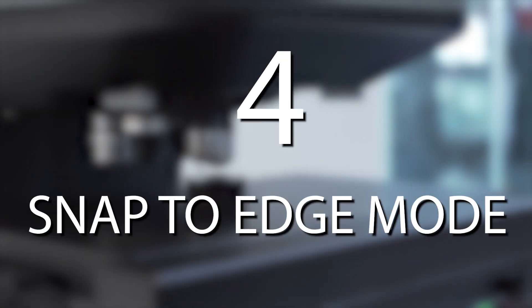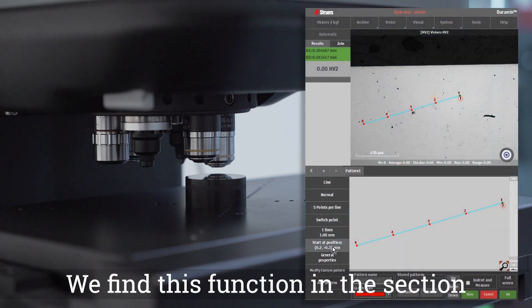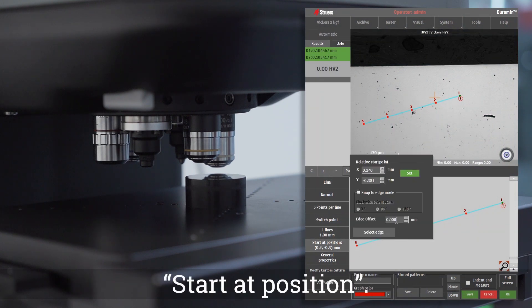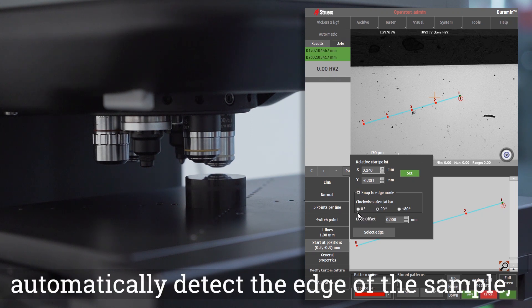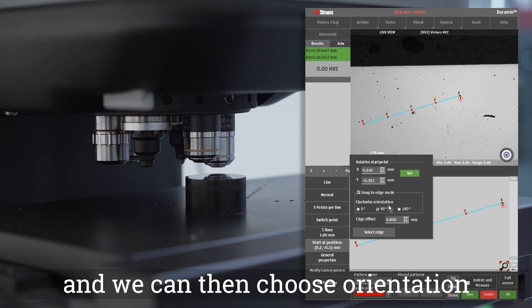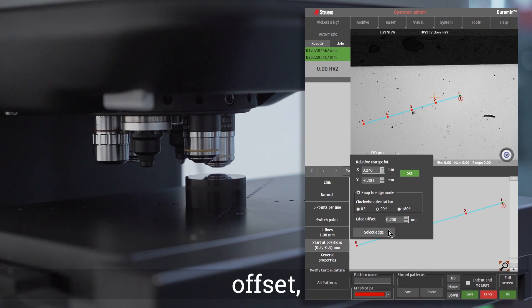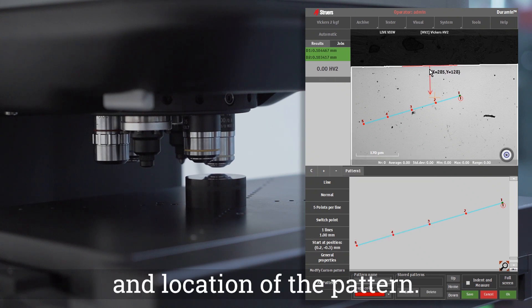Snap to Edge Mode. We find this function in the section Start at Position. If it's enabled, the software will automatically detect the edge of the sample and we can then choose orientation, offset and location of the pattern.